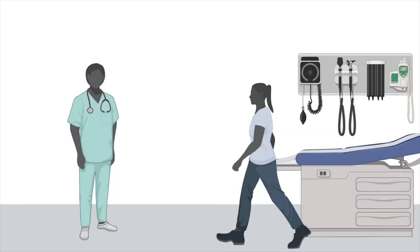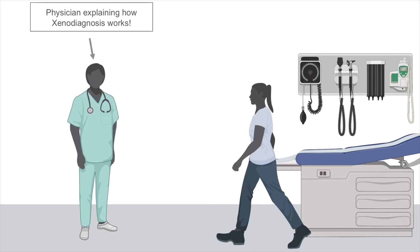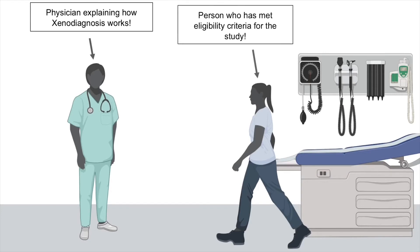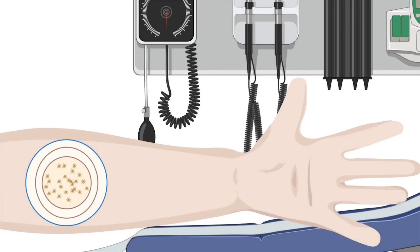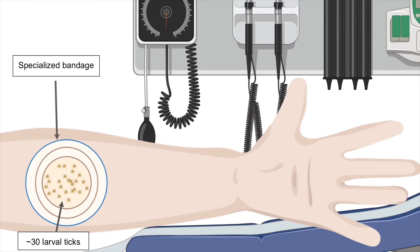In this study, we are using xenodiagnosis to find out whether laboratory-raised ticks can be used to detect the bacteria in people who had Lyme disease and took antibiotics. We are interested to see if the presence of bacteria correlates with persisting symptoms in these individuals. Subjects who meet the criteria for the study will have about 30 larval ticks placed on them, either on the site of a previous characteristic Lyme disease erythema migrans rash or on the forearm.